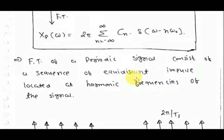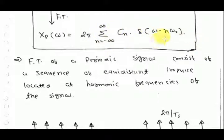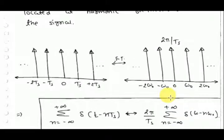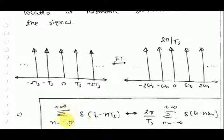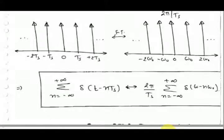Also remember: an impulse train in the time domain has a Fourier transform that is also an impulse train, amplitude-scaled by 2 pi over T_s. For the LTI system problem with a given impulse response h(t) and periodic input, direct convolution is complex. Instead, take the Fourier transform of both signals and multiply them. First represent the periodic signal in Fourier series form, then take the Fourier transform.